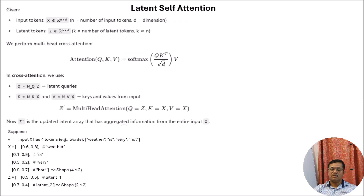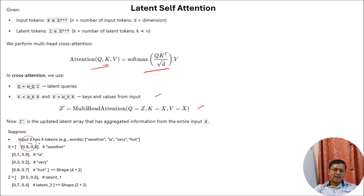Now I will try to explain how to calculate the latent self-attention. I have an input with just four tokens: 'weather is very hot'. Each of those tokens is represented by an embedding vector of size 2. And I have just considered two latent vectors — Latent 1 and Latent 2 — with some random numbers assigned to them.